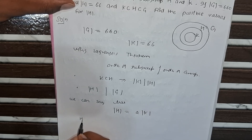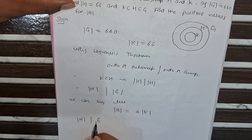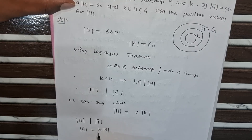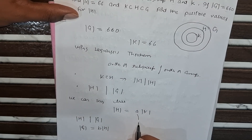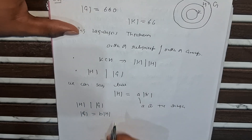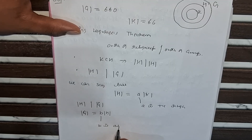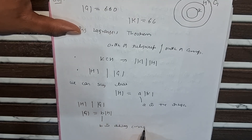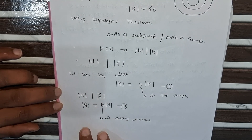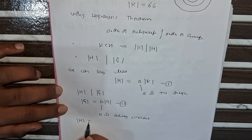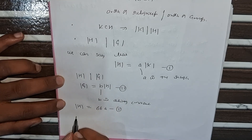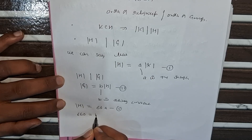Order of H divides the order of G, so order of G equals b times the order of H, where a is a positive integer and b is also a positive integer. From equation 1: order of H equals 66 times a. From equation 2: 660 equals b times the order of H.